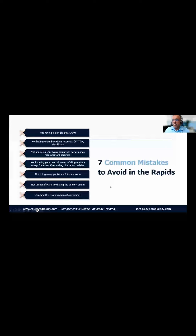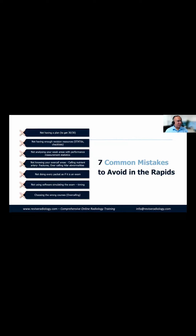The seven most common mistakes people make are: not having a plan, not having enough revision resources like checklists, not analyzing your weak areas and working on them, and if you frequently over-call certain areas, you must stop doing that. You've got to practice as if it's an exam — don't just do five cases and take a coffee break; sit down and finish the full 25-minute packet.